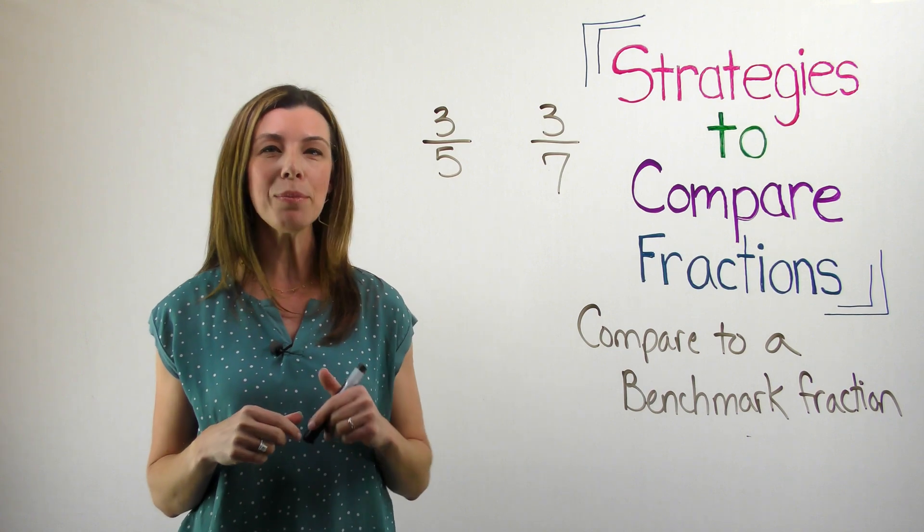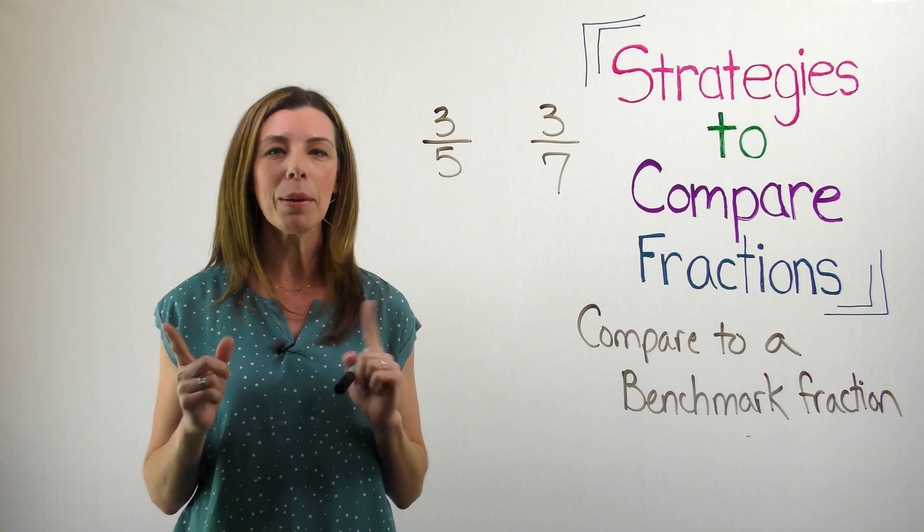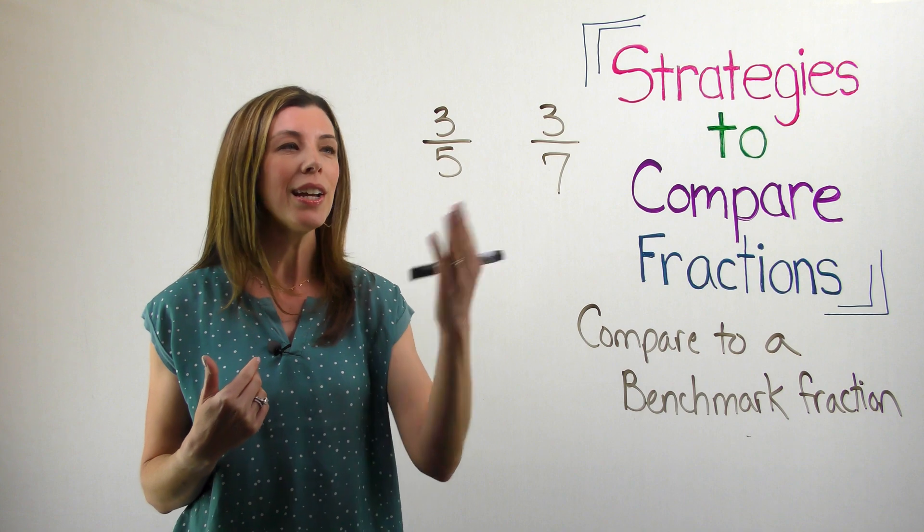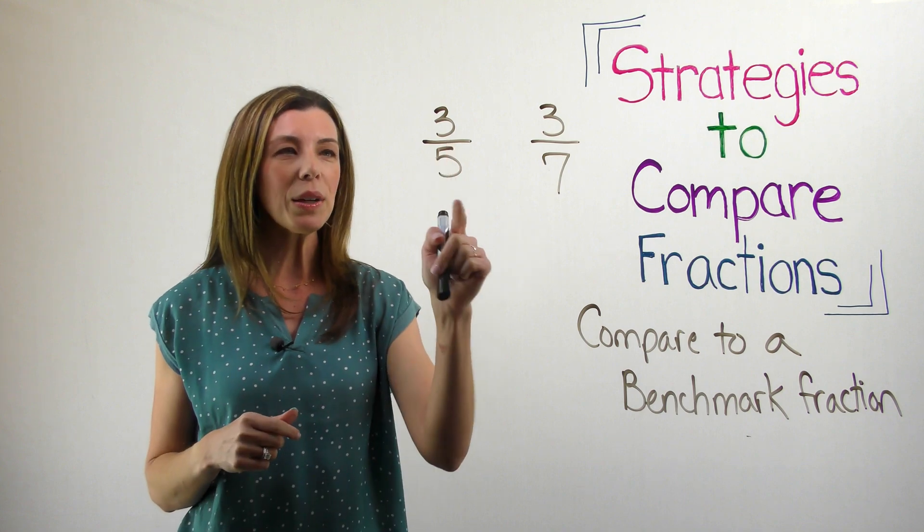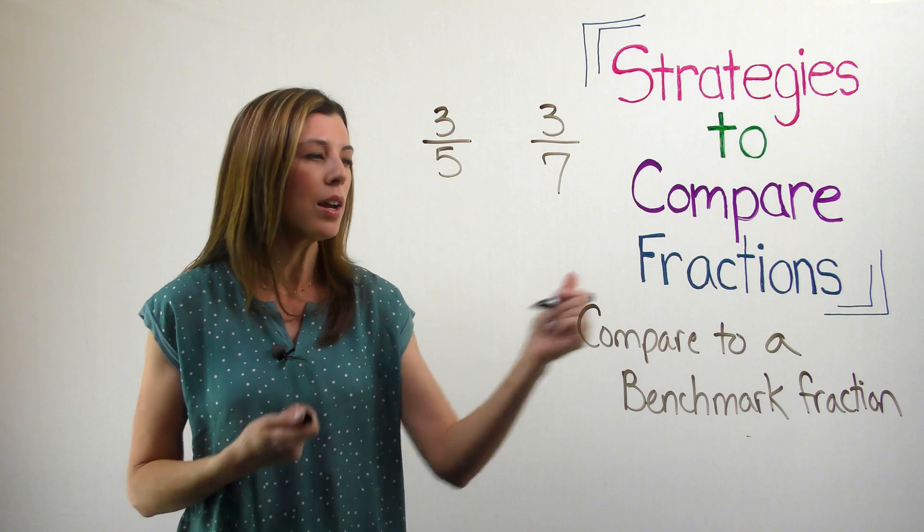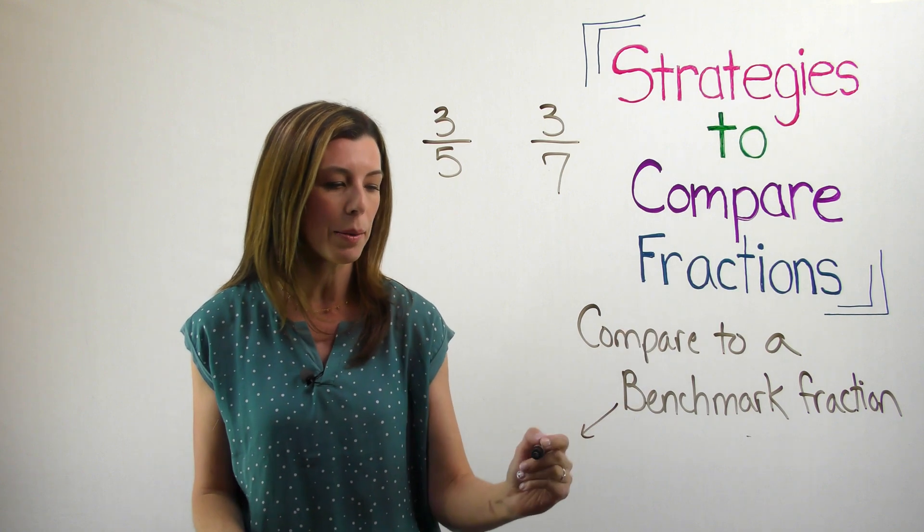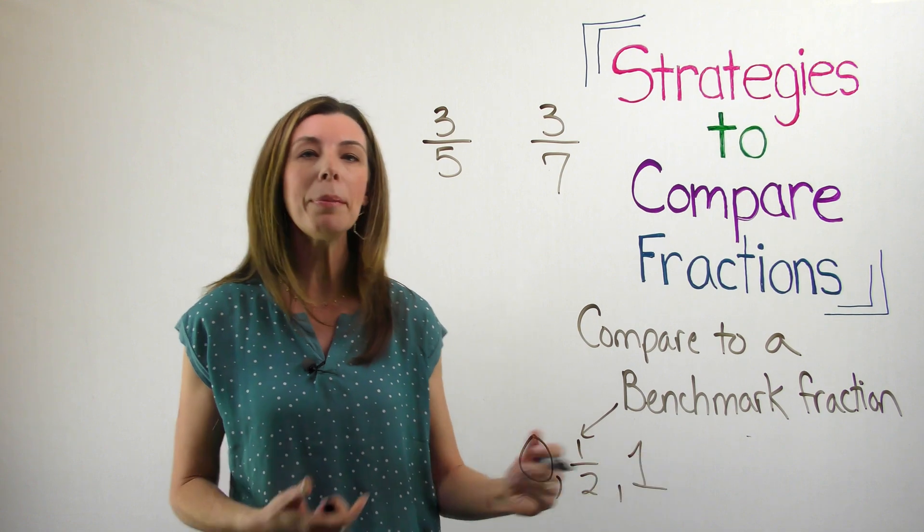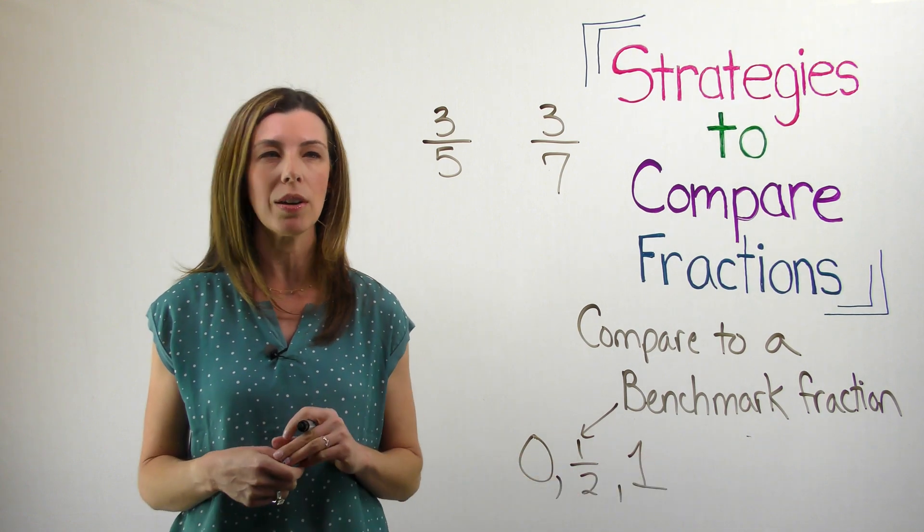I'm going to use my same two fractions that I was using before with the common numerators, but I'm going to show you how I can also use comparing to a benchmark fraction to tell which one is larger. Is three-fifths more than one-half or less than one-half? So again, when I say benchmark fractions, really what I'm talking about is zero, one-half, or one whole. So I'm going to be comparing them in relationship to those.